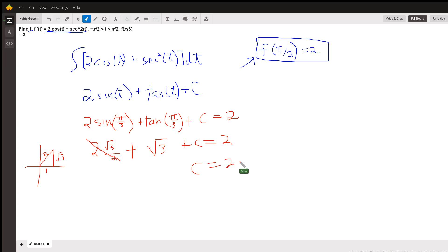So C is 2 minus 2 radical 3. So the original function f of t is 2 sine of t plus tangent of t plus 2 minus 2 radical 3.